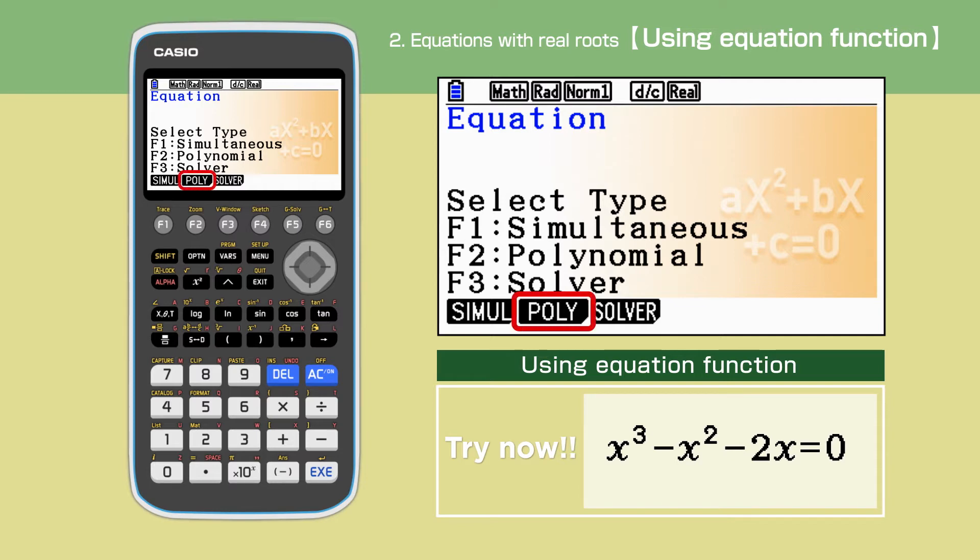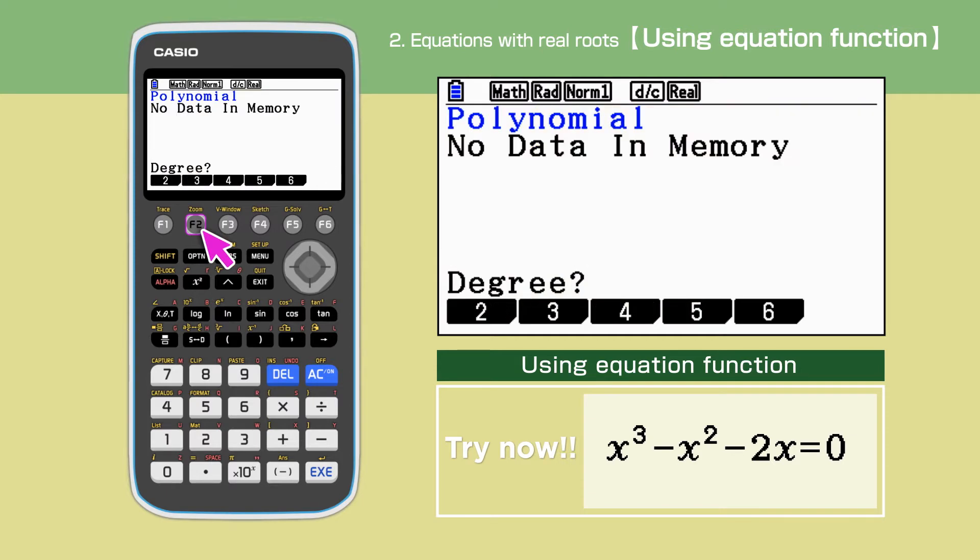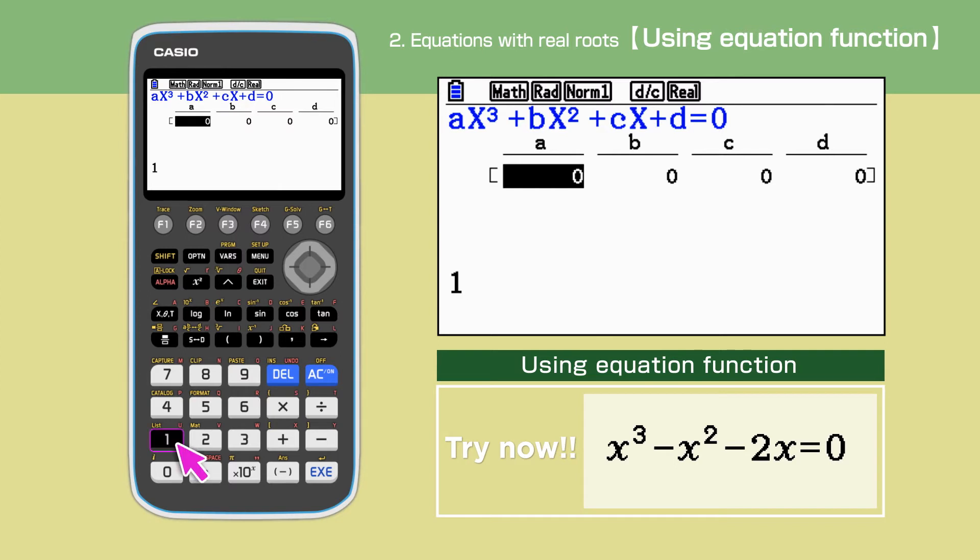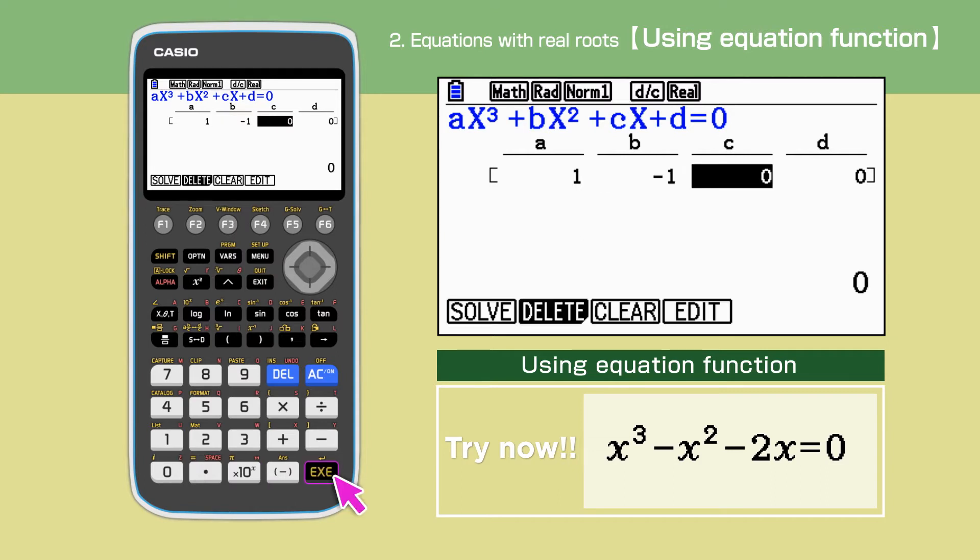The first method is using the equation function. Press F2 to select polynomial equation. The question is cubic, so press F2. The equation needs to be entered in the form of f of x equals 0. Make sure to use bracket minus, not subtraction minus, to input negative numbers. Enter the coefficients 1, minus 1, minus 2, and 0.